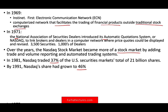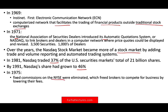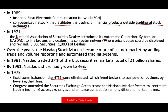What really started to change things is in 1975, when the fixed commission on the NYSE was eliminated. This freed brokers to compete for business by lowering their fees — when the fee is the same, you cannot compete, but once the exchange said you could charge any fee you want, brokers can compete and lower their fees. Congress also amended the Securities Exchange Act in 1975 to create a national market system to centralize trading across exchanges and enhance competition among different market makers.